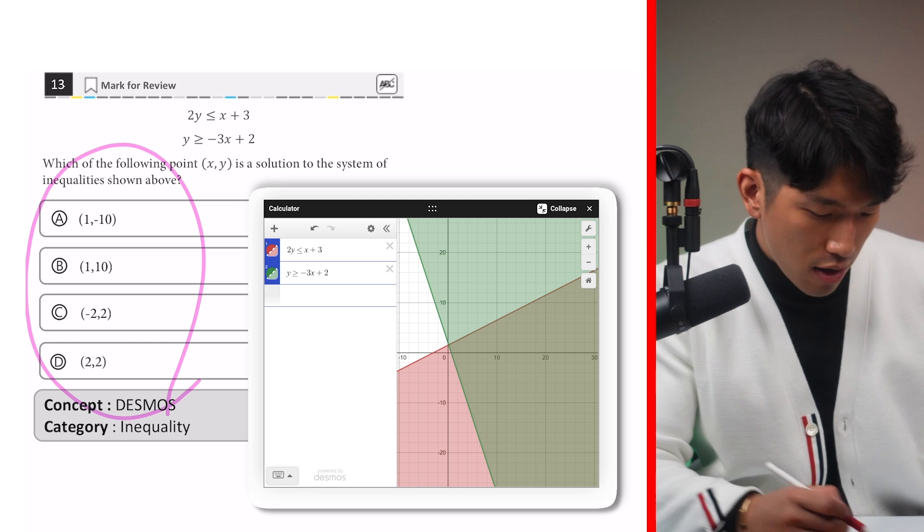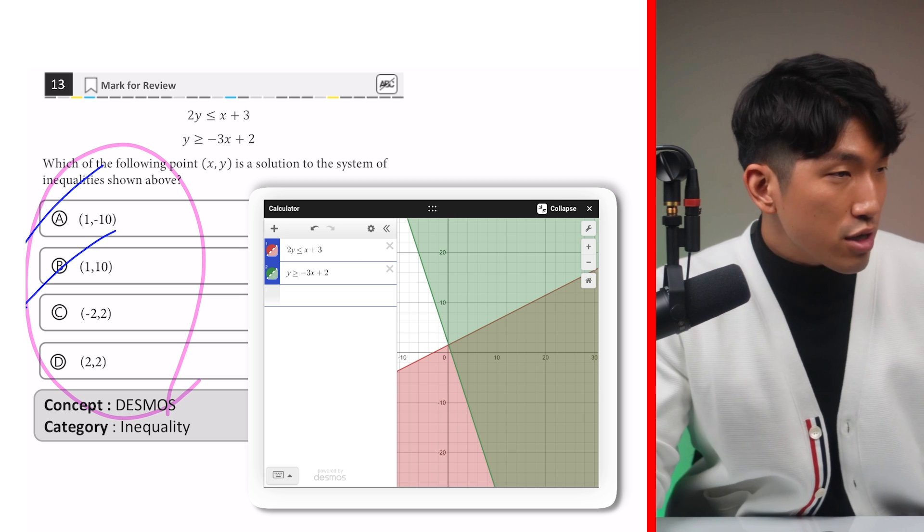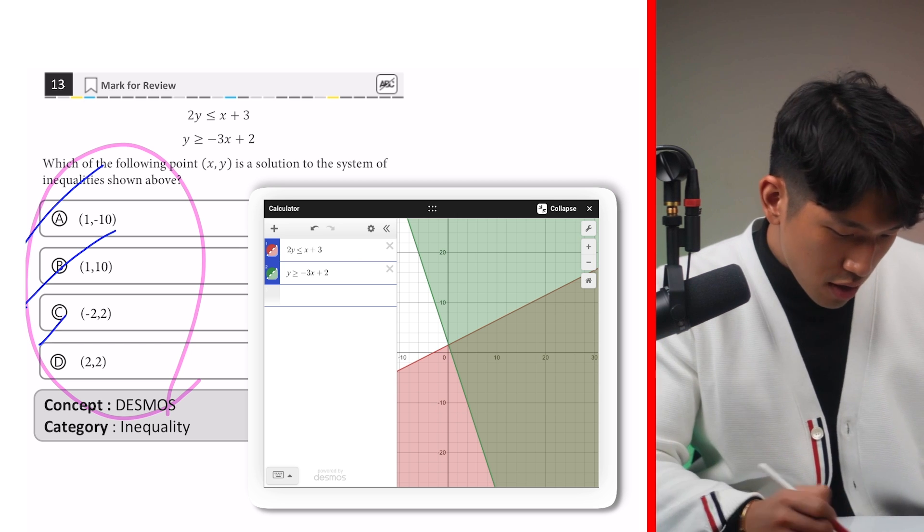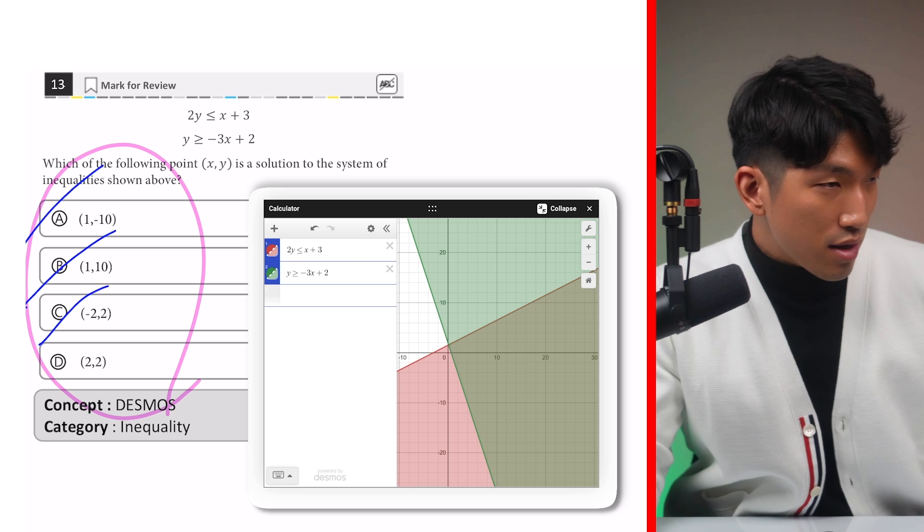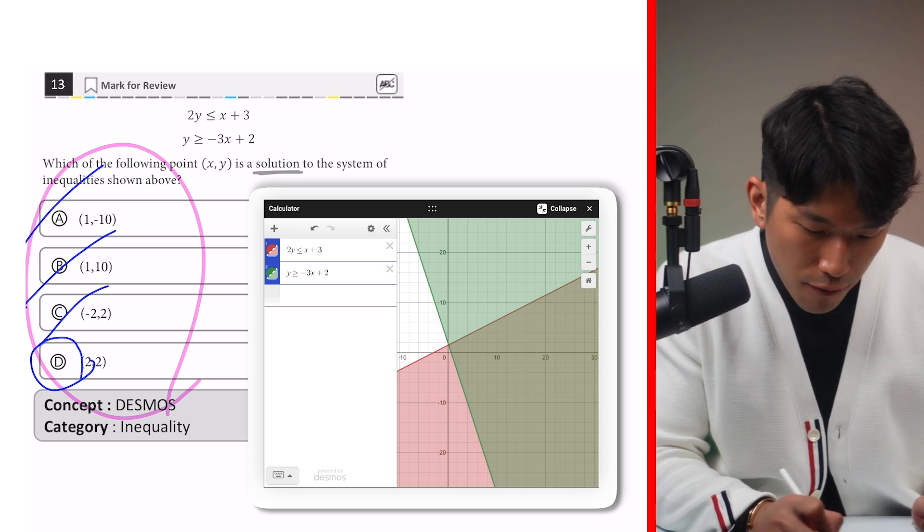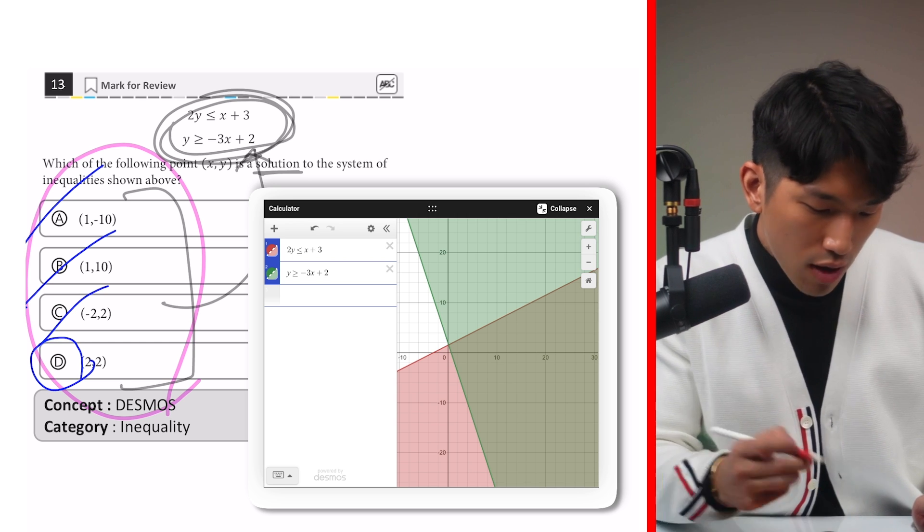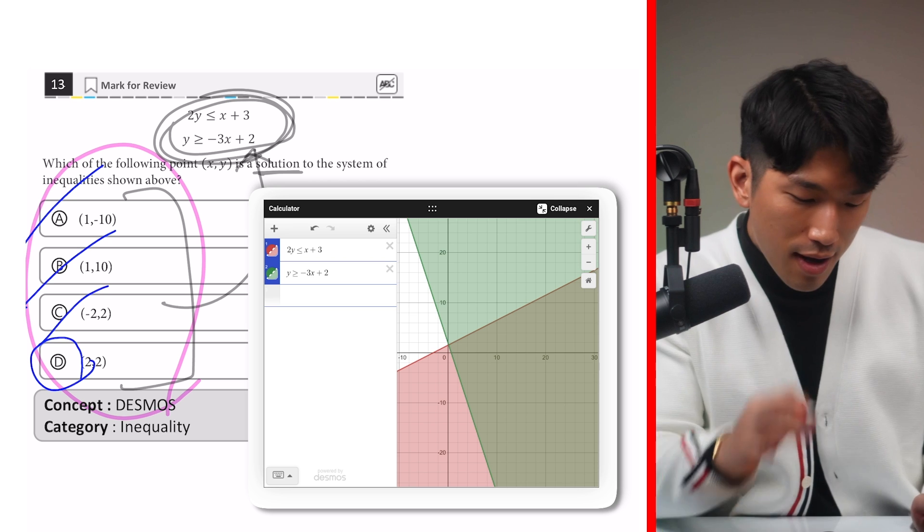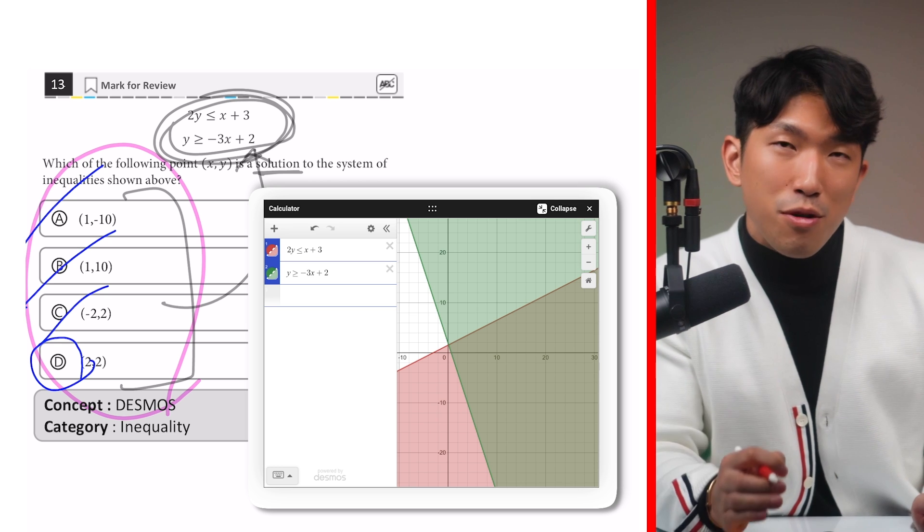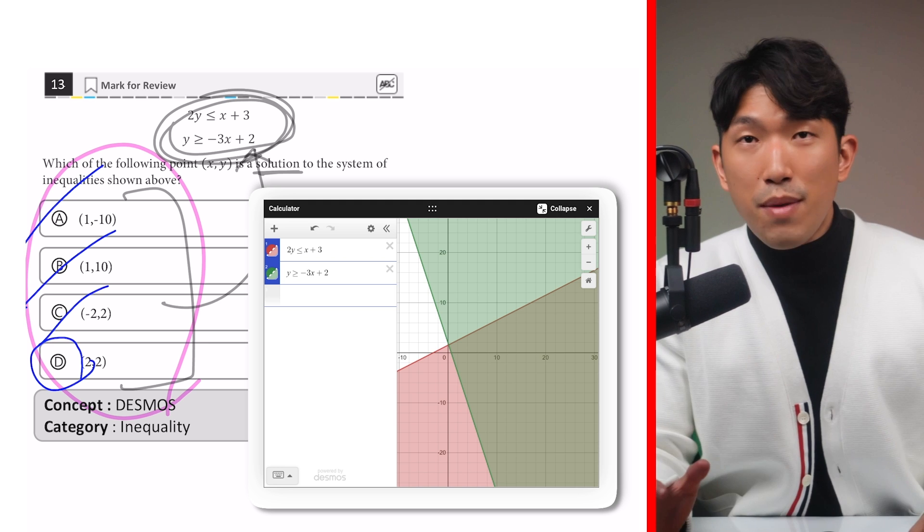And 1 minus 10 is way down there. So it's not going to work. 1 positive 10 is only on the green. Minus 2, 2. Nobody cares. And 2, 2 is going to be right there, which means that's going to be our answer. So the main takeaway here is whenever you're looking for a solution to multiple inequalities, instead of plugging them all in, even though that works, it takes forever. Instead, graph it out on Desmos and see which coordinate falls under the overlapping region. Does that make sense?